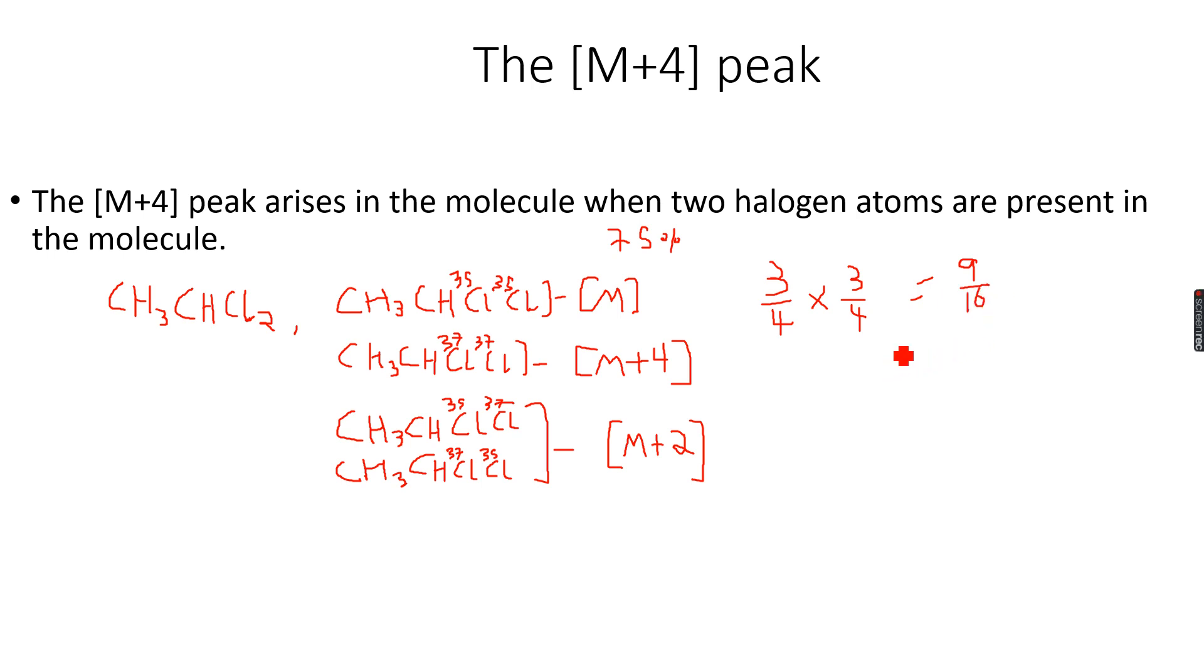The probability of getting the M+4 is 1/4 times 1/4, because the percentage abundance of the Cl-37 isotope is 25%. So there are 2 Cl-37 isotopes, and that's why we multiply 1/4 by 1/4, so we get 1/16.